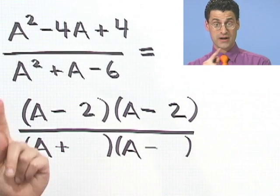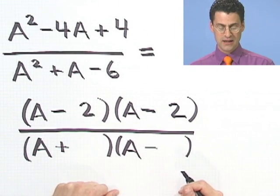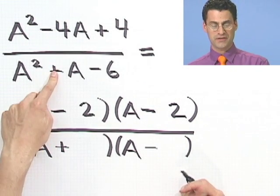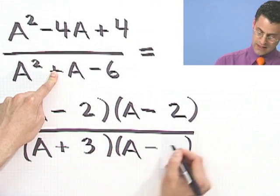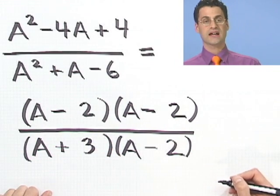3 and 2 have that property if I subtract them the right way. Where should I put the 3? I want the thing to be positive, so I want the big guy to be by the positive and the little guy to be here. It looks like that's a good factorization.